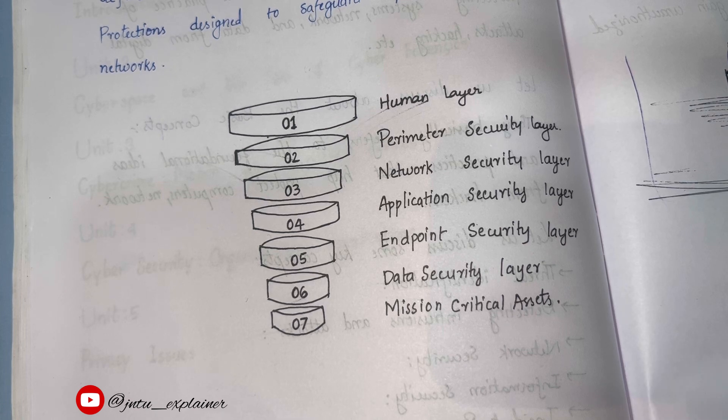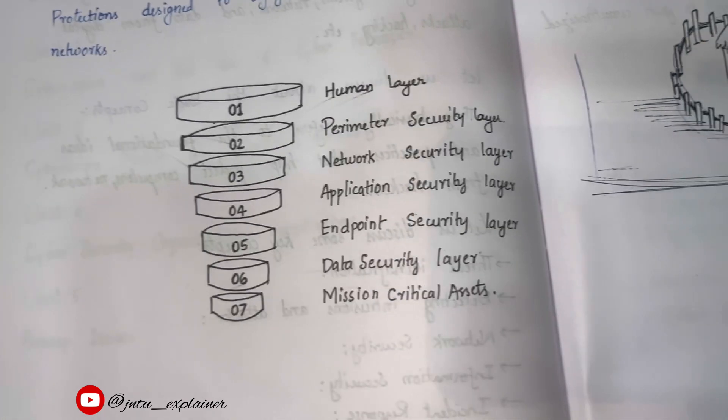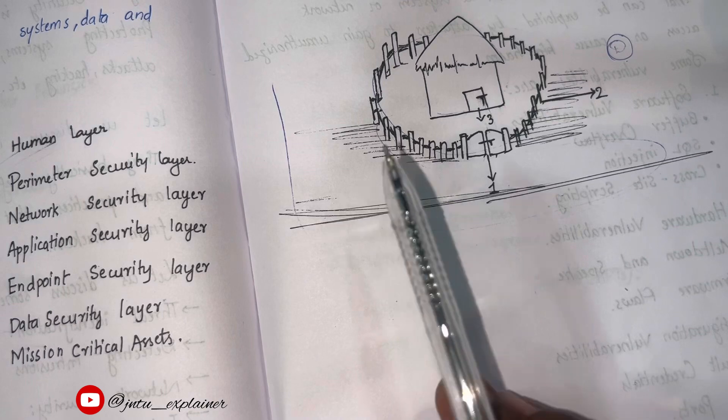Let's discuss number two, perimeter security layer. Perimeter security layer is the wall of a fortress. I have just discussed, it is like the fencing, fencing of this house.